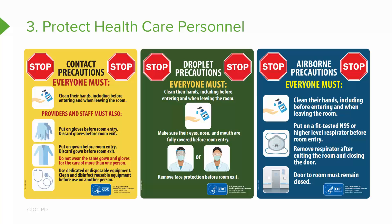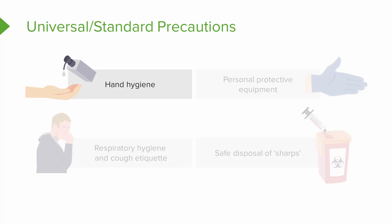Let's look at what's the difference between universal or standard precautions and transmission precautions. On the screen you see a picture of transmission precautions. Universal or standard precautions are the basic level of precautions that are the minimum standard for all patients — anyone who's being taken care of. These are four really important points that all of us follow when practicing universal or standard precautions.